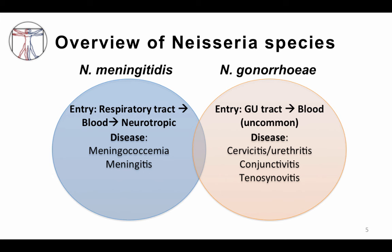The other syndrome is meningococcemia, which is a disseminated severe infection. In contrast, Neisseria gonorrhea infection for the most part enters through the genitourinary tract because it is predominantly a sexually transmitted disease. In some cases it will go into the blood and you can have disseminated infection, although this is less common.